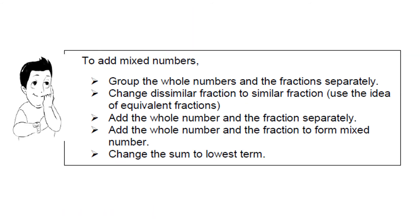To summarize how to add mixed numbers: First, group the whole numbers and fractions separately. Second, change dissimilar fractions to similar fractions by finding the LCD and listing multiples. Third, add the whole numbers and fractions separately. Fourth, combine the whole number and fraction to form a mixed number. Finally, change the sum to its lowest term.